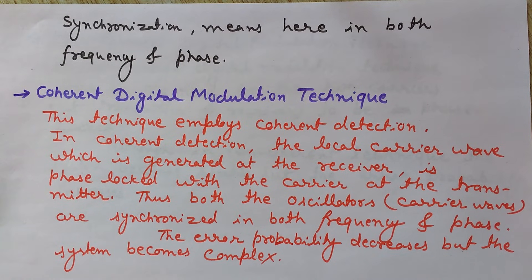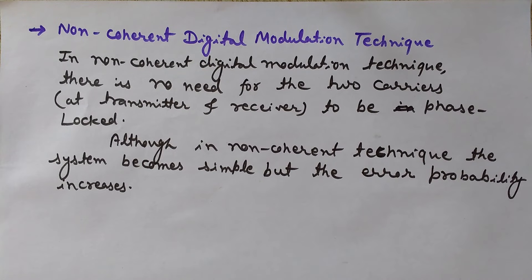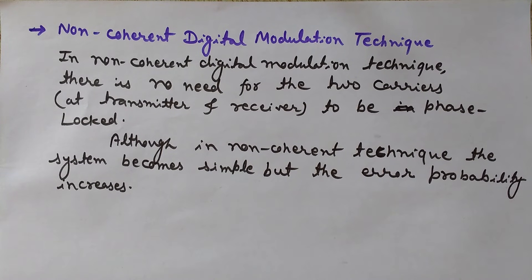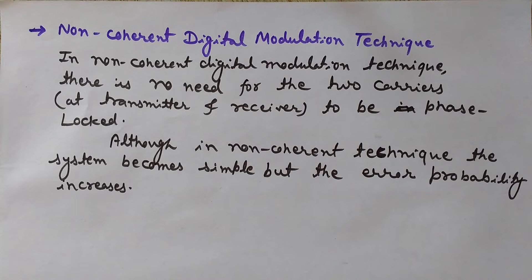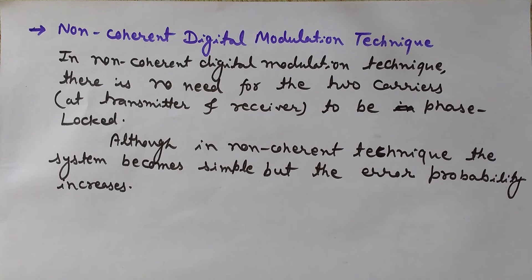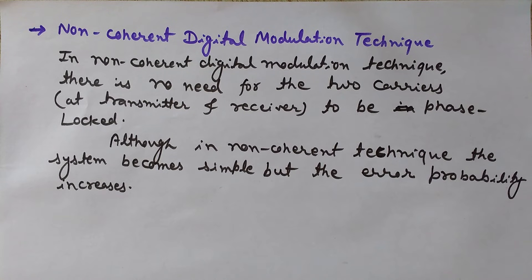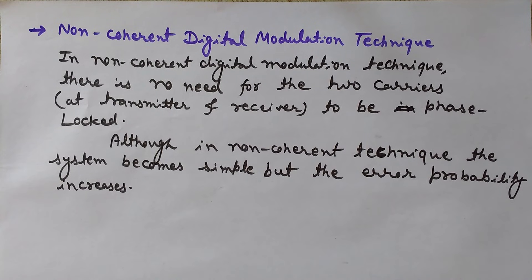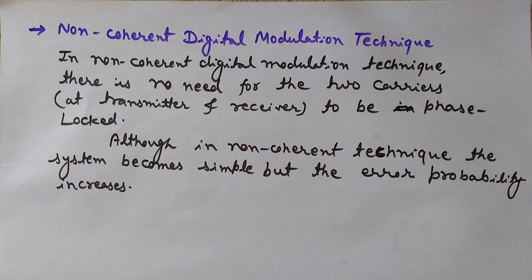Now let's see non-coherent digital modulation techniques. In non-coherent digital modulation, there is no need for the two carriers — used at the transmitter and at the receiver — to be phase-locked. There is no need for synchronism in phase or frequency for these two carriers.